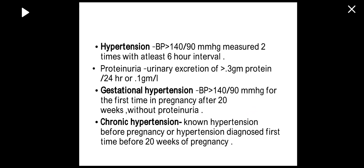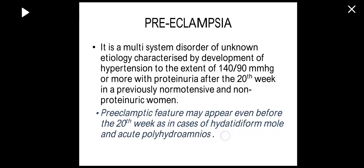In gestational hypertension there is no proteinuria. Chronic hypertension means the patient is hypertensive before 20 weeks of pregnancy — either known hypertensive before pregnancy or first-time diagnosed before 20 weeks.